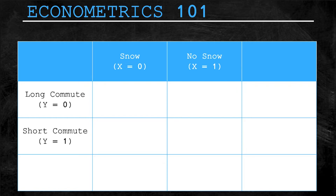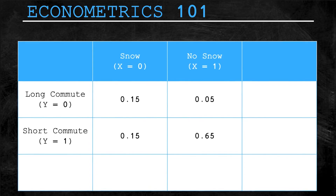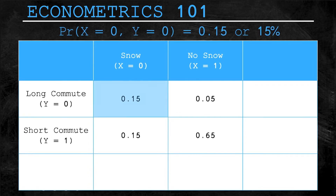In this example, there are four possible outcomes for your commute: it snows and you have a long commute; it snows and you have a short commute; it doesn't snow and you have a long commute; and finally, it doesn't snow and you have a short commute. Our table is populated with some probabilities. In the first outcome, X equals zero and Y equals zero — a long commute with snow — and over a large sample of commutes, this is expected to happen 0.15, or 15% of the time.